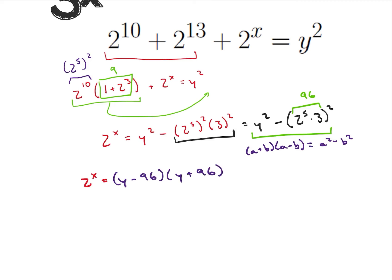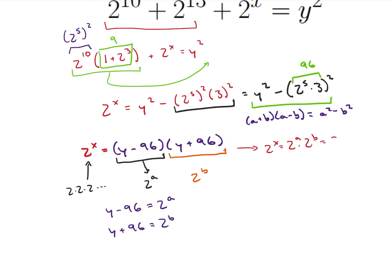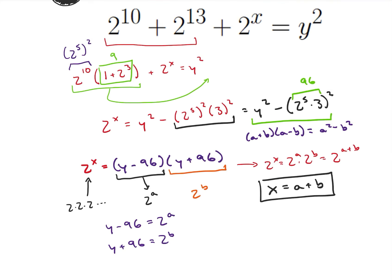This is where we get into number theory. On the left I have 2 to the x, which is just 2 times 2 times 2 and so on. That means both factors on the right must each be a power of 2. So y minus 96 equals 2 to the a, and y plus 96 equals 2 to the b, for some integers a and b. Then 2 to the x equals 2 to the a times 2 to the b, which equals 2 to the (a+b). So x equals a plus b — I'll need that later.